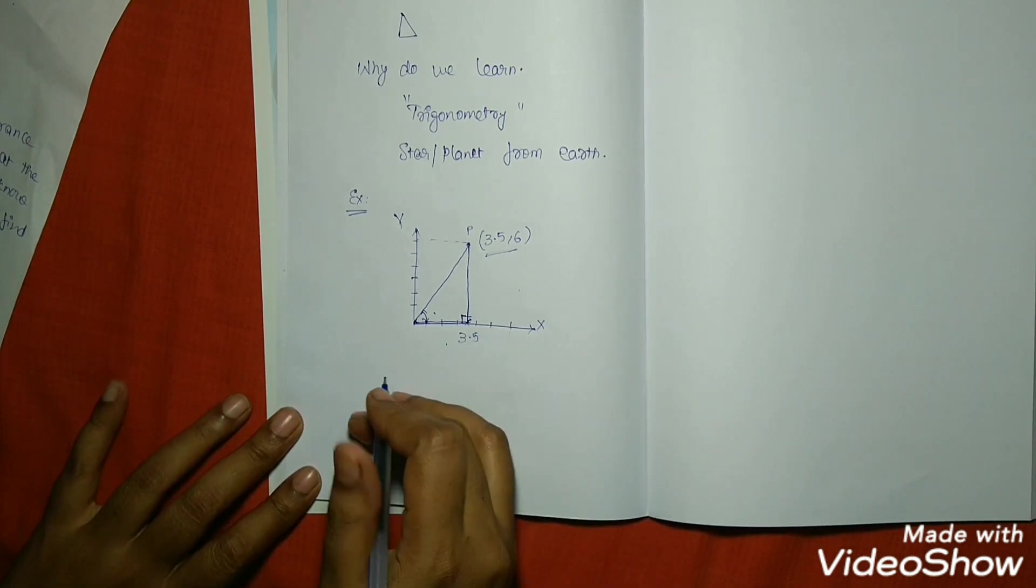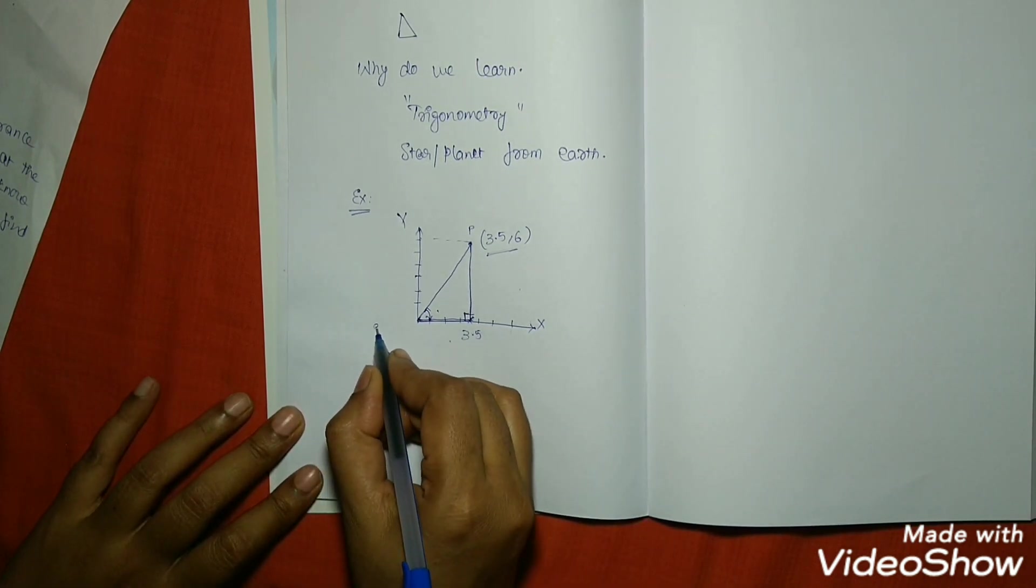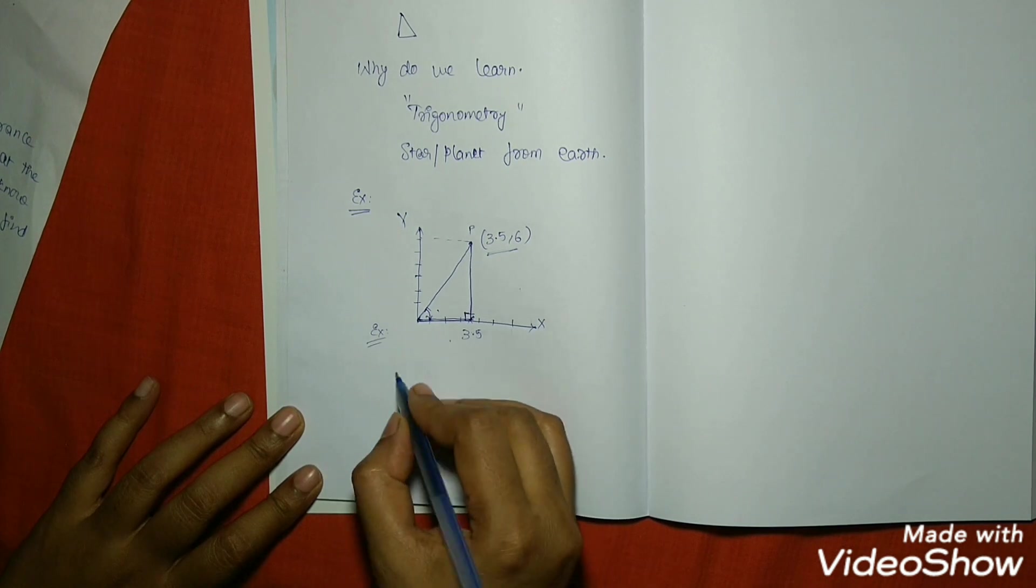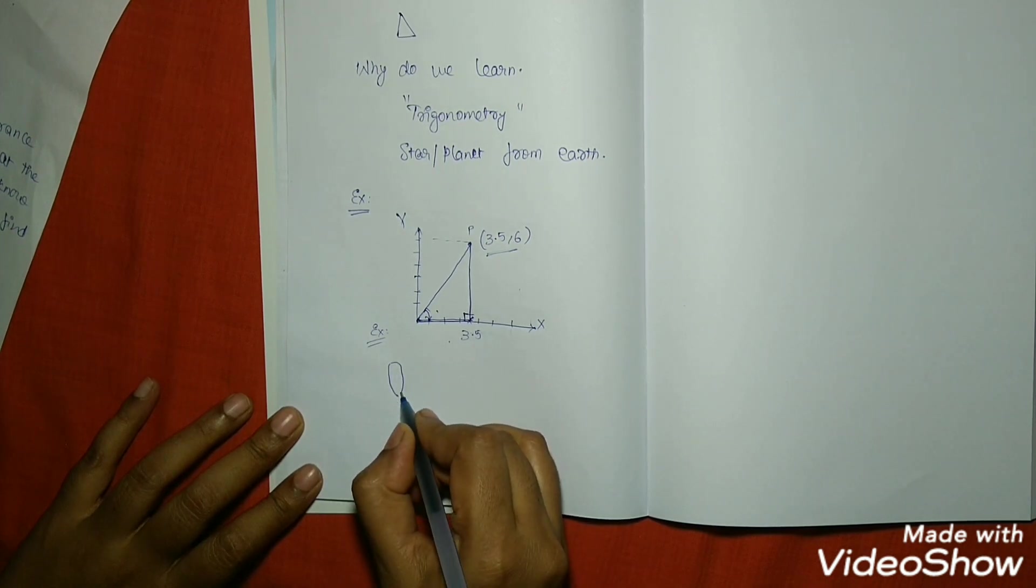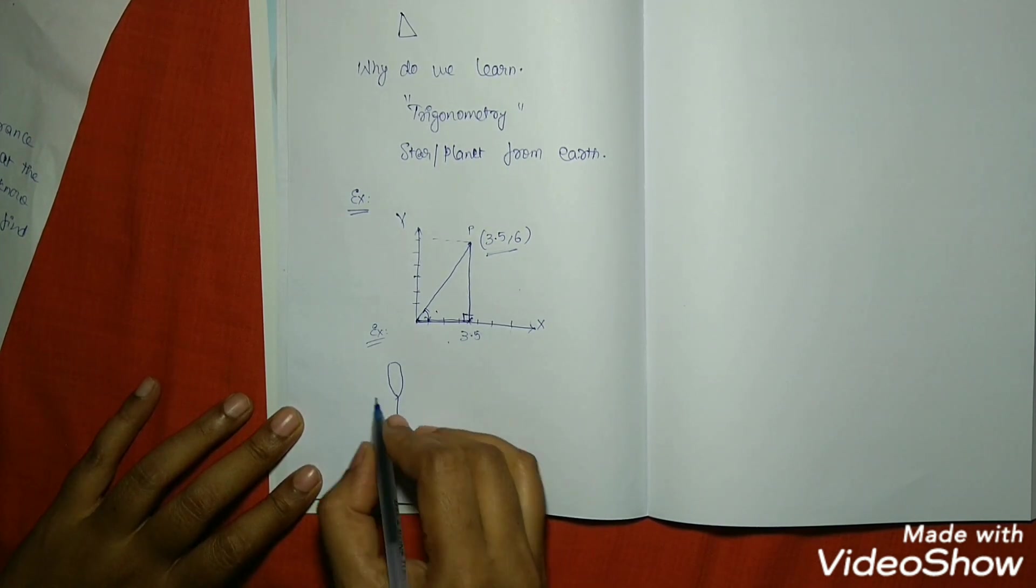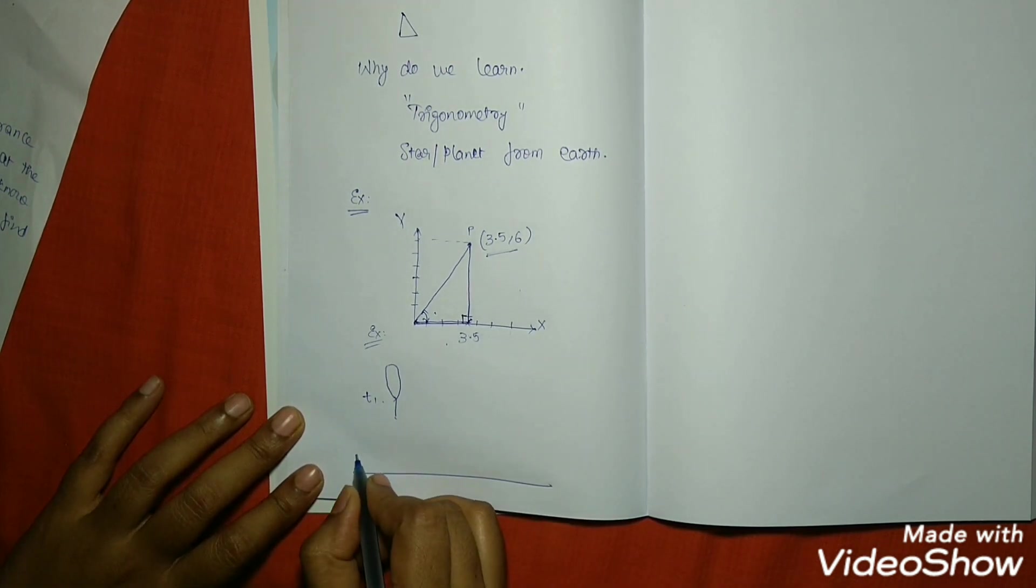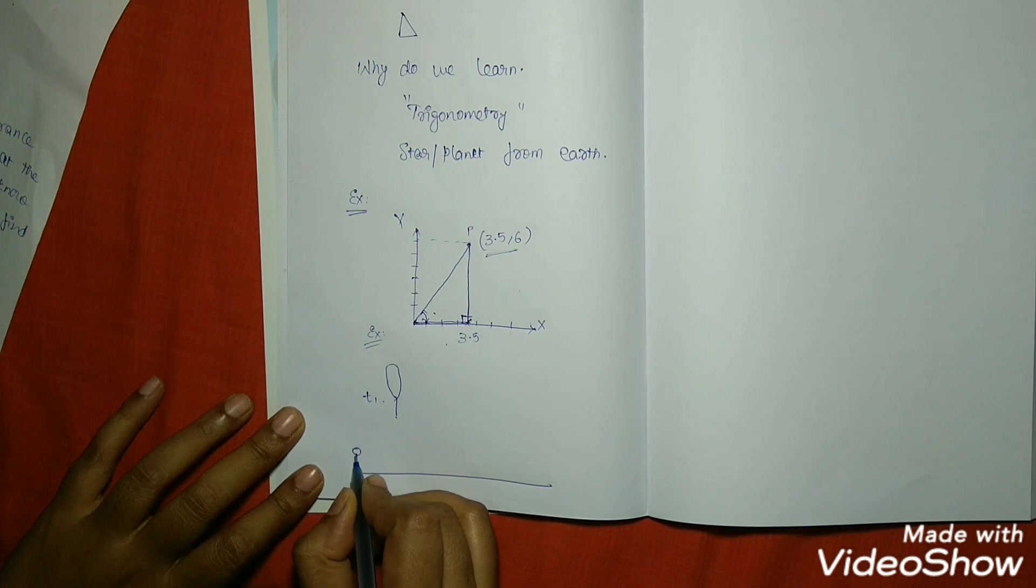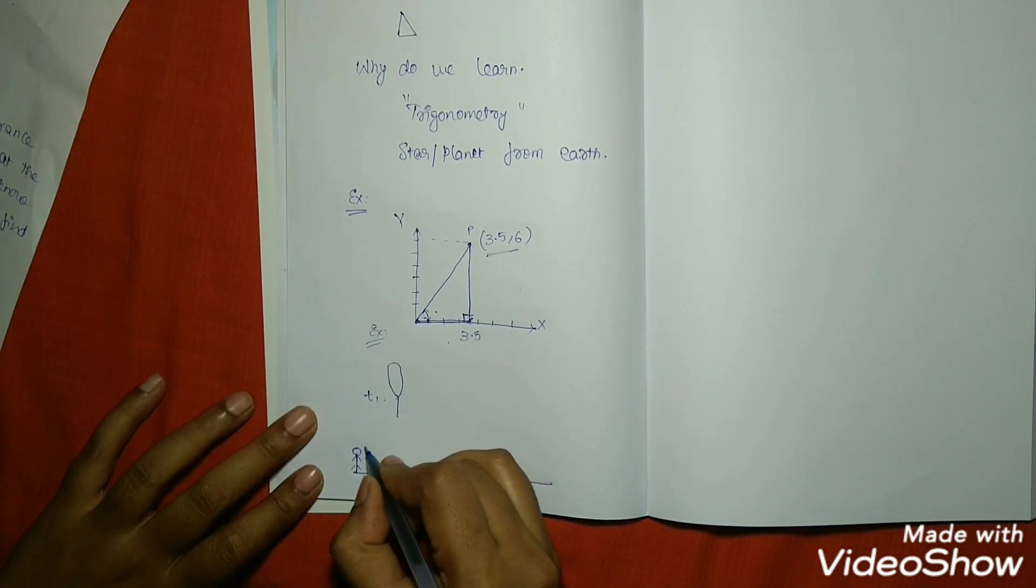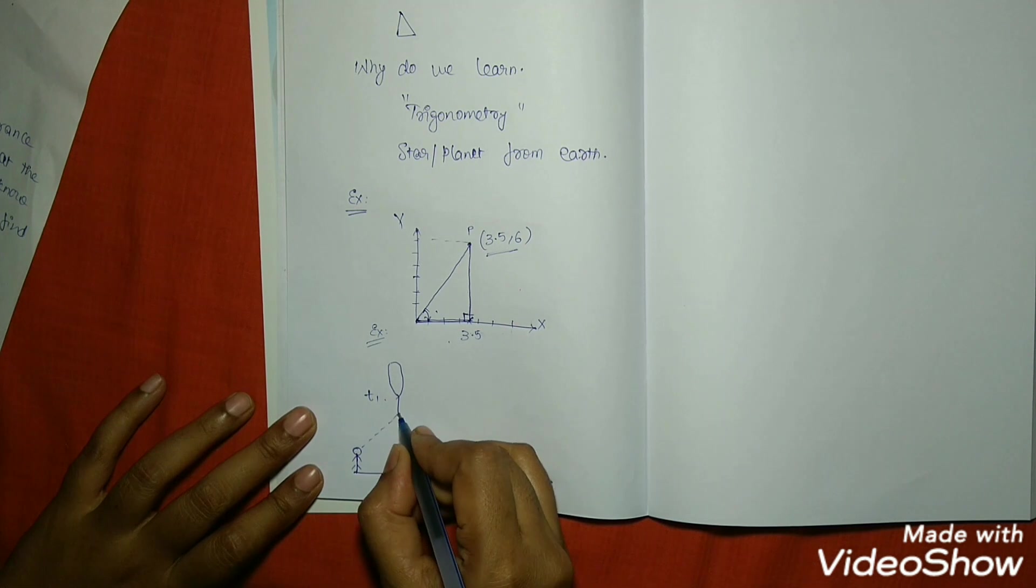One more example. Suppose there is a balloon flying here. At time T1, the balloon is here, and a boy on the road is observing, standing here. A boy is observing the balloon at time T1.